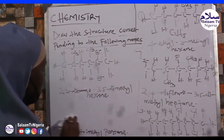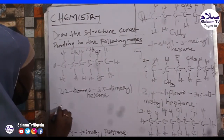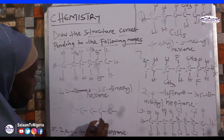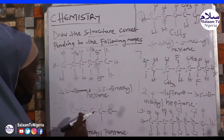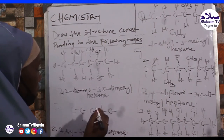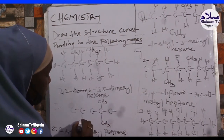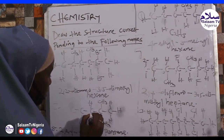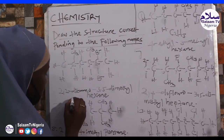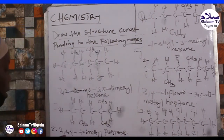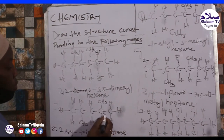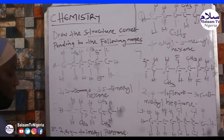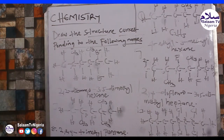The last one: 2,2,4-trimethylpentane. Pentane has 5 carbons: 1, 2, 3, 4, 5. We have 2,2 meaning at position 2 we have the same substituents, and at position 4 — tri meaning 3 methyl groups total: two at position 2 and one at position 4.